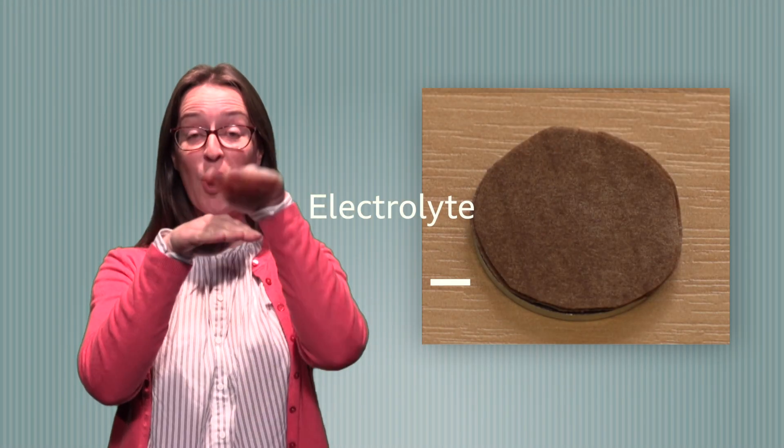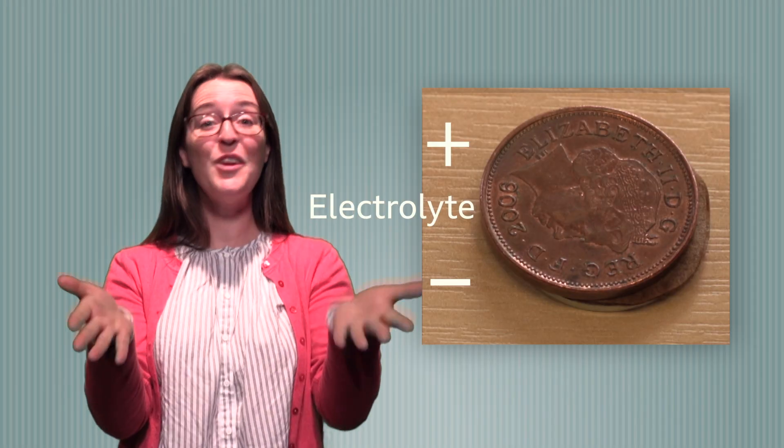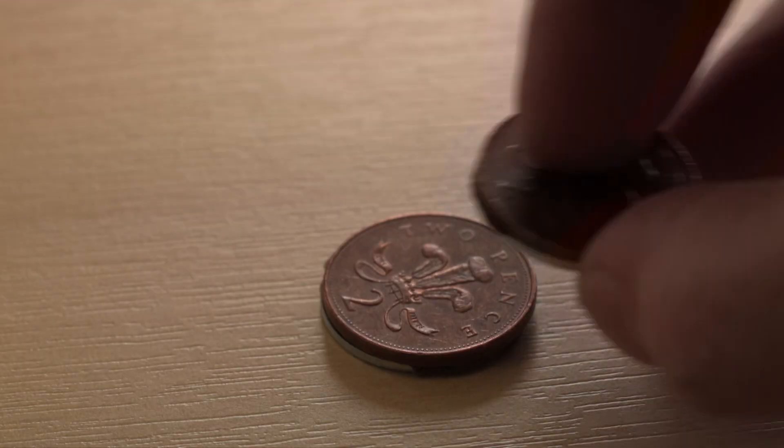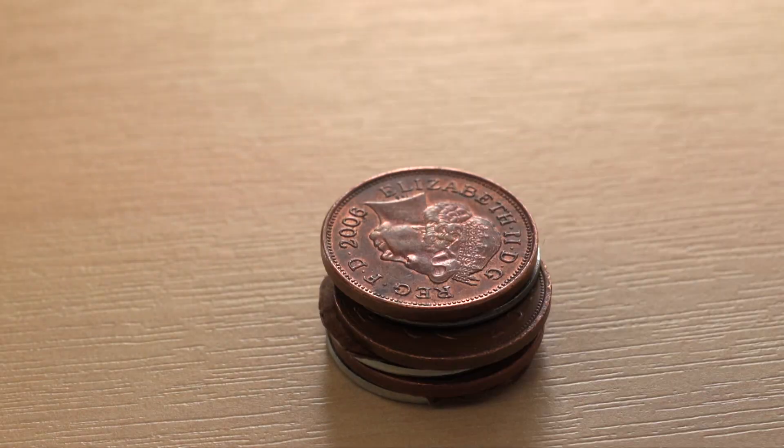If you stack them with the zinc at the bottom, the cardboard in the middle and the copper at the top, then you have made a cell which has a small charge. Then you just pile them up more and you increase the voltage.